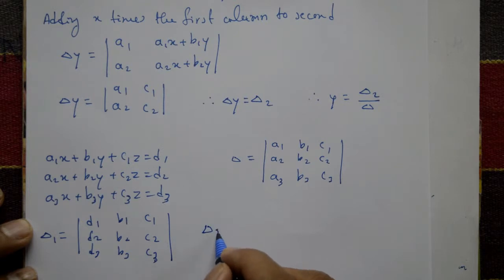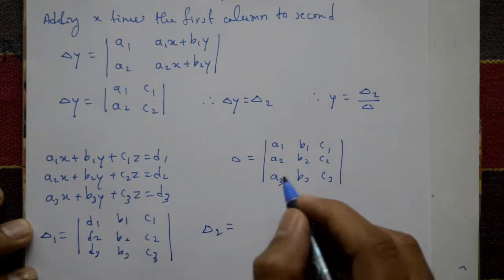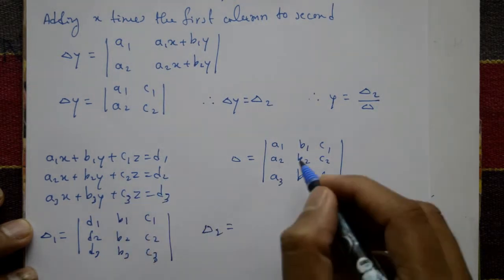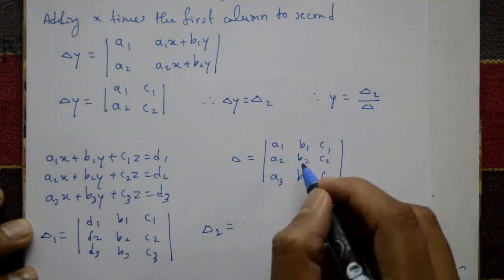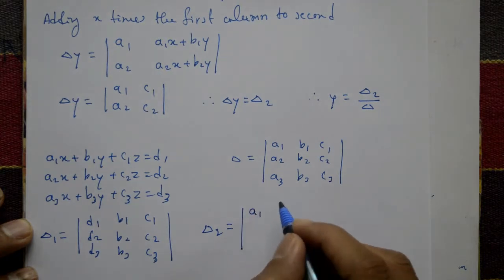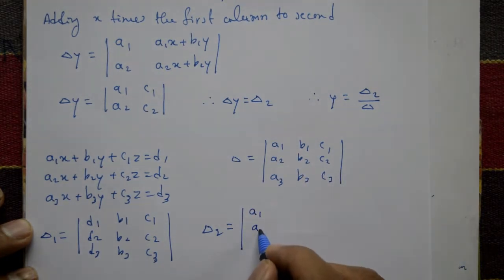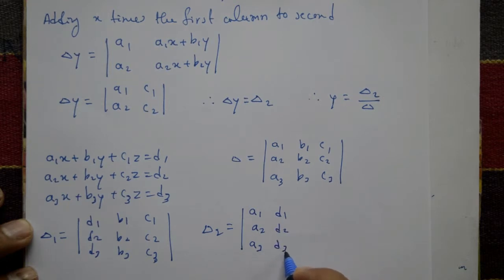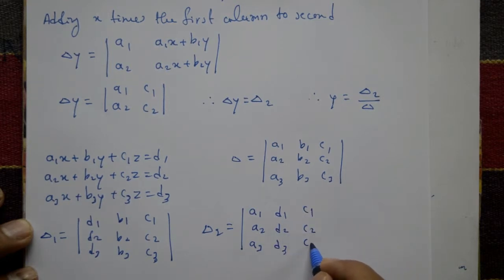Delta 2 means substituting d1, d2, d3 in the second column, while the first column a1, a2, a3 and third column c1, c2, c3 remain unchanged.